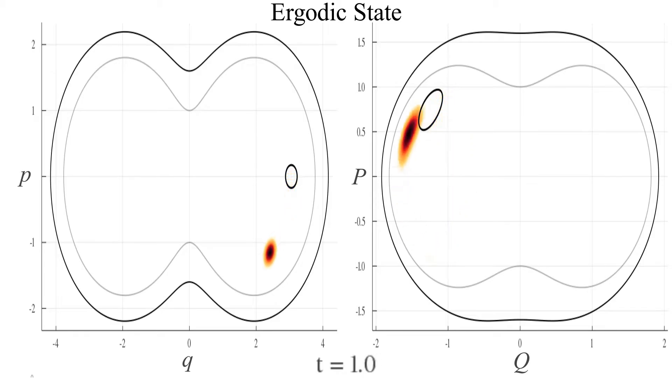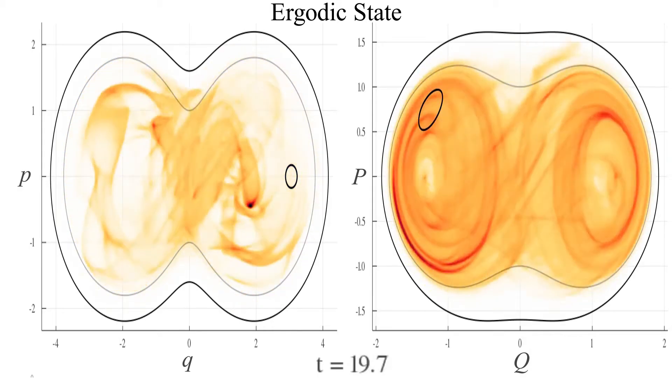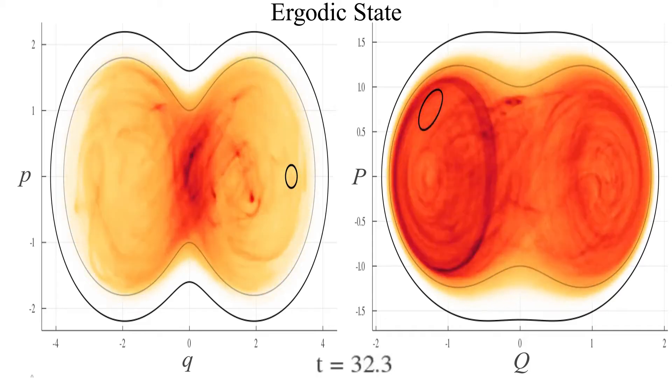As before, the ensemble moves away from the initial region as a whole, but this time, it does not come back. Instead, it starts to break apart as the different initial conditions wander off exponentially.